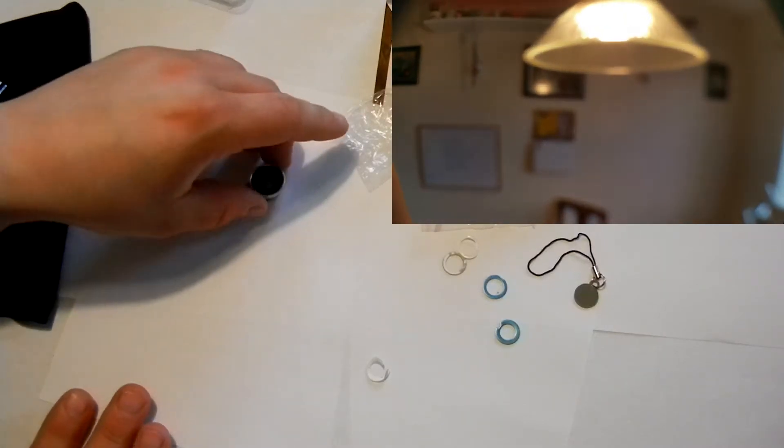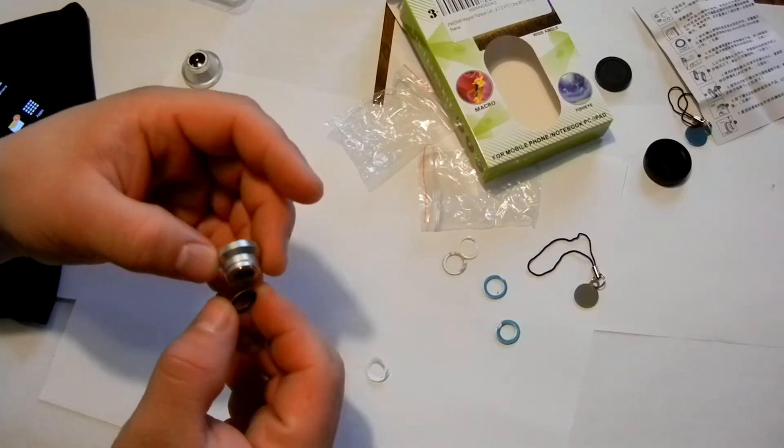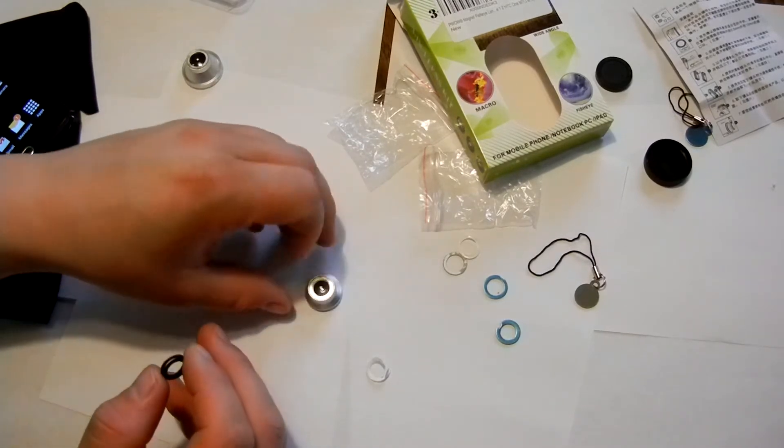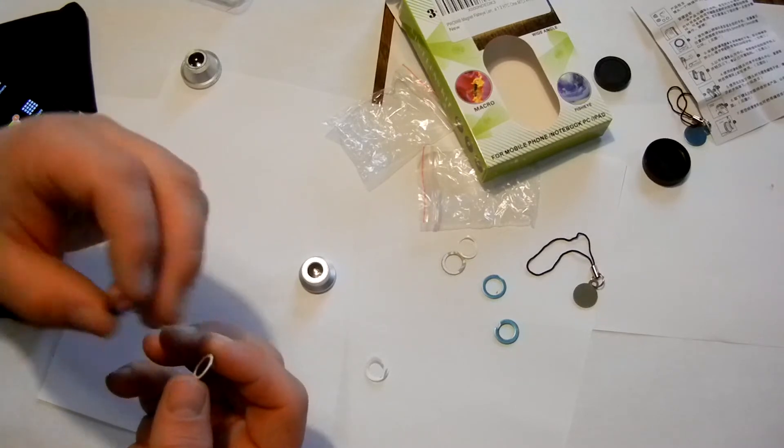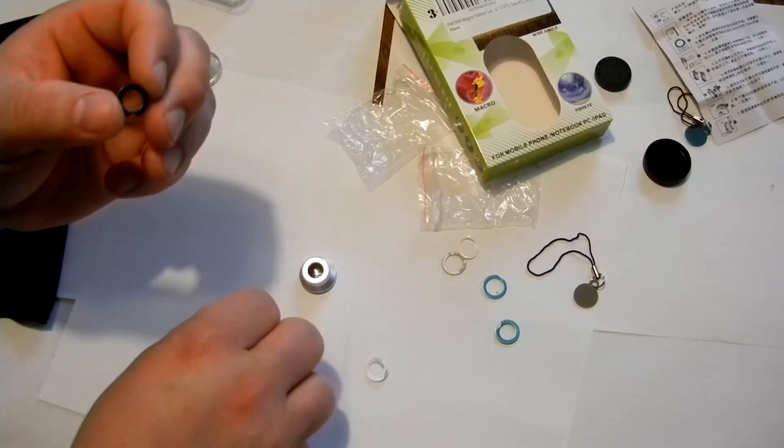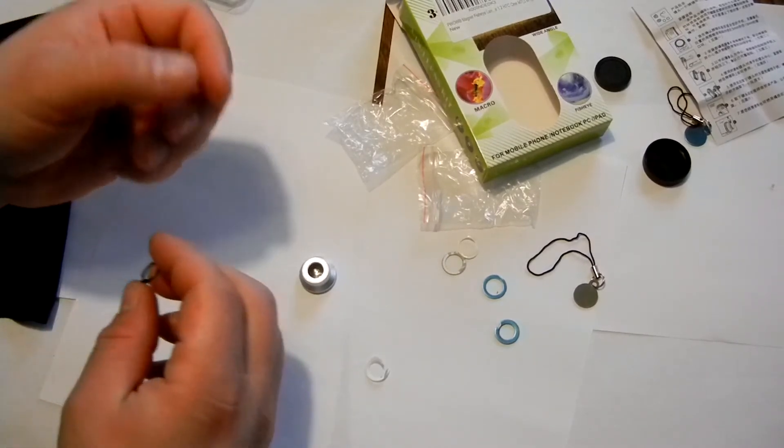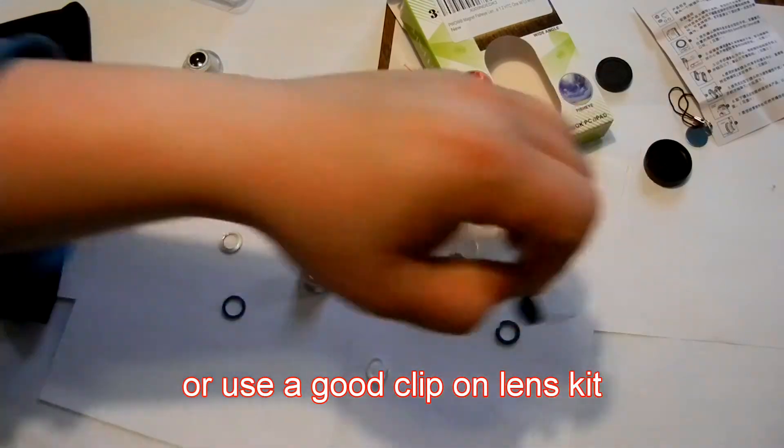So if you were thinking about getting a wide-angle lens for your smartphone that has OIS, you want to keep that in mind. So what I basically have to do is I have to wait for a lens kit that's not magnetic, that will actually attach without the use of magnets.